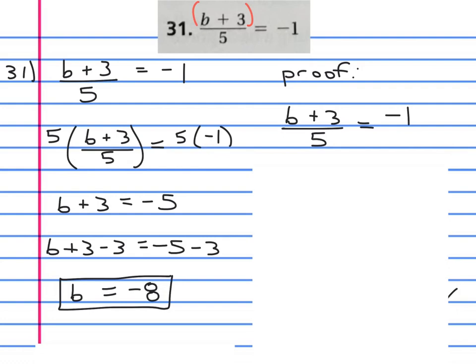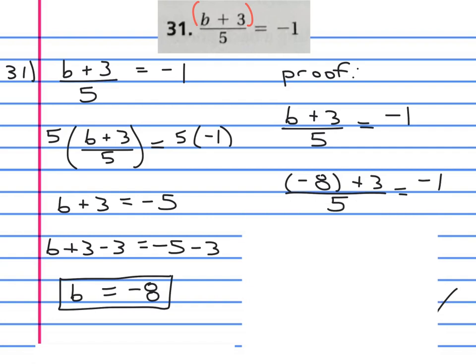The original problem is untouched. Then the second line, we're going to write the exact same equation, but wherever there was a variable we put parentheses with the value inside. So we put parentheses negative eight close parentheses plus three over five equals negative one. Now we're simplifying using order of operations.